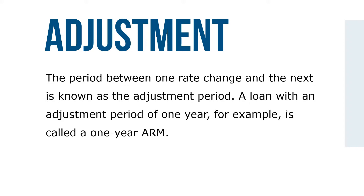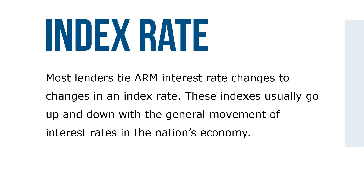A loan with an adjustment period of one year, for example, is called a one-year ARM. Most lenders tie ARM interest rate changes to changes in an index rate. These indexes usually go up and down with the general movement of interest rates in the nation's economy.